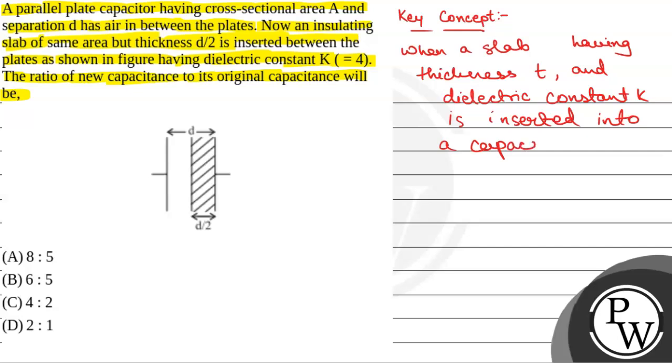of length d, then the new capacitance of the capacitor, c dash, becomes epsilon 0 a by (d minus t plus t by k).